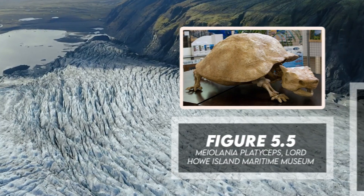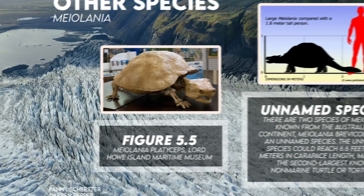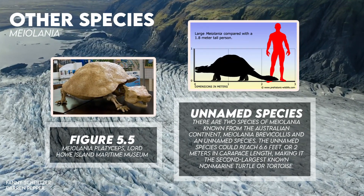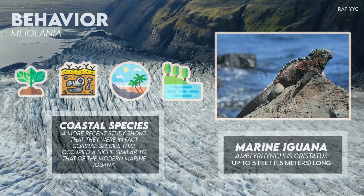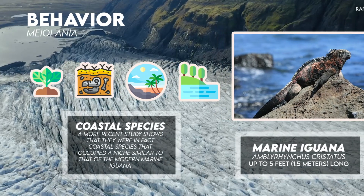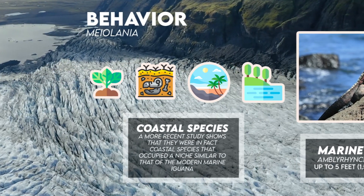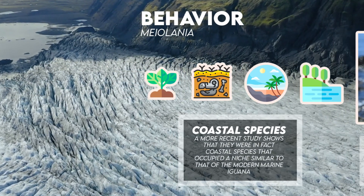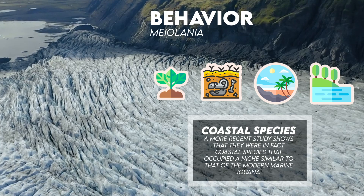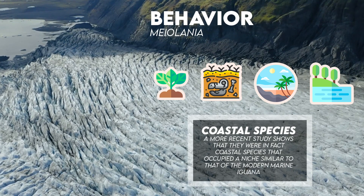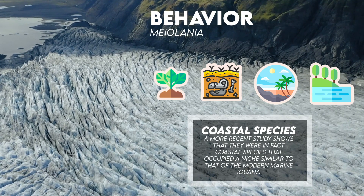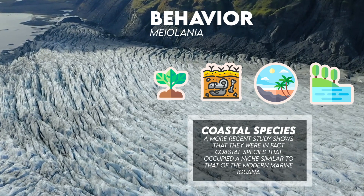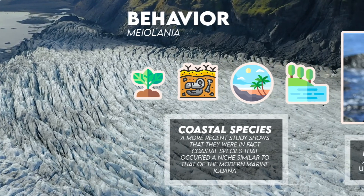Myolania fed on plants. Because the remains known by 1925 were found close to beaches, it was thought to be aquatic. It is now known to have been terrestrial. Nonetheless, a more recent study shows that they were in fact coastal species that occupied a niche similar to that of the modern marine iguana.